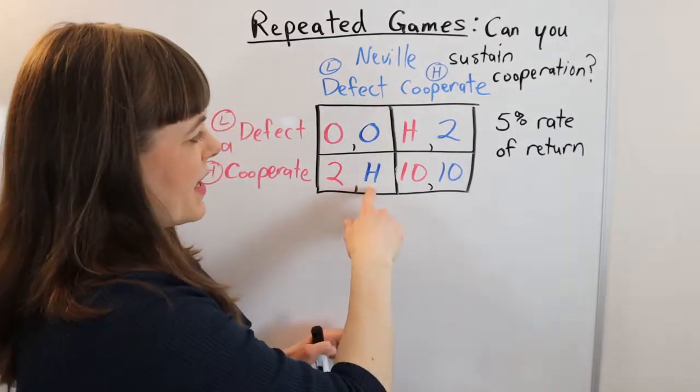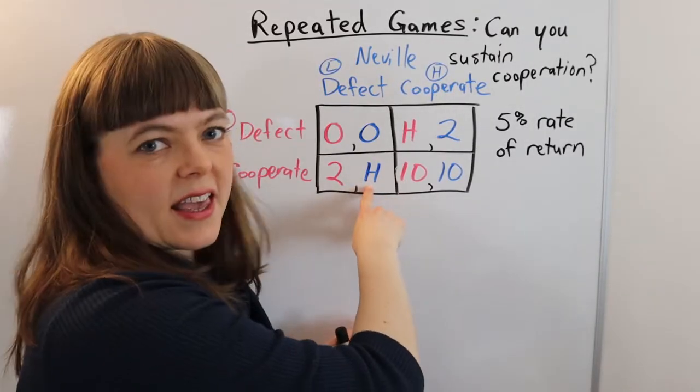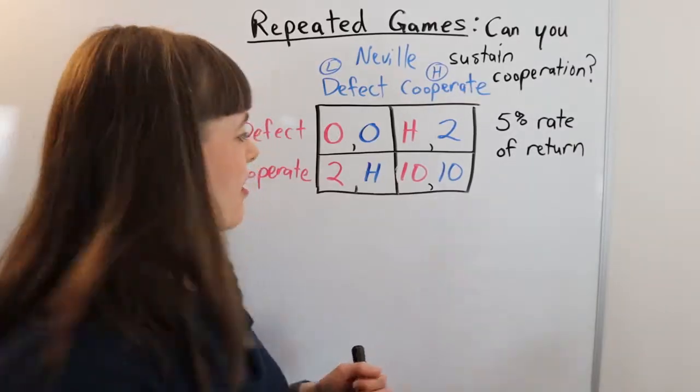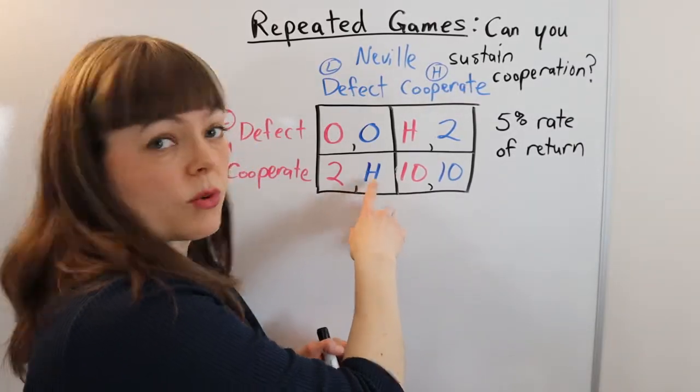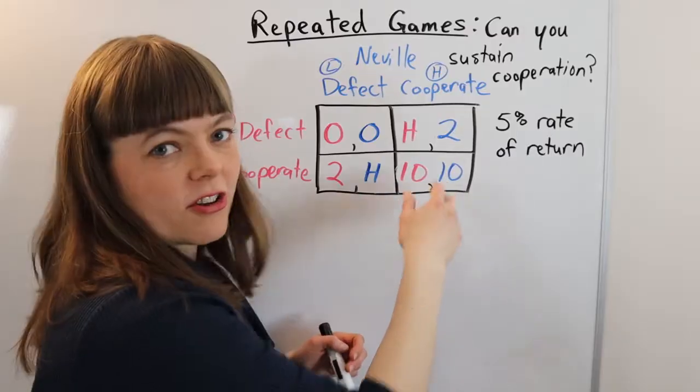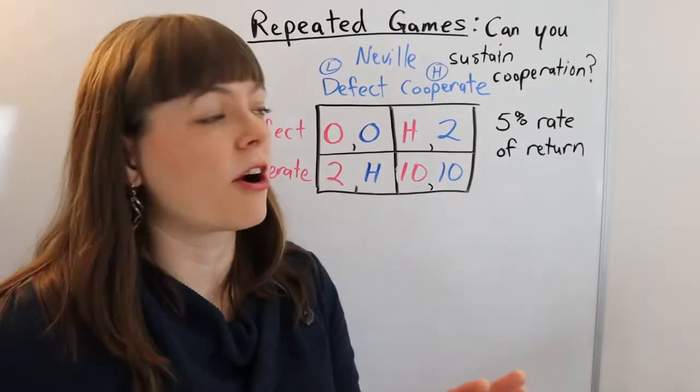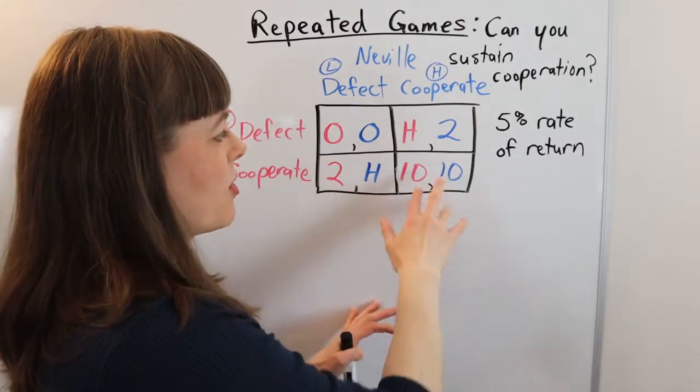And one way of thinking about that is actually to think, well, if H is like $5 million, maybe getting $5,000 once is going to beat out getting $10 every period for years infinitely into the future. So that would be a case where this would not sustain cooperation.